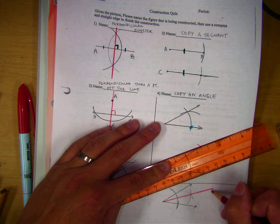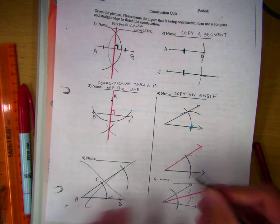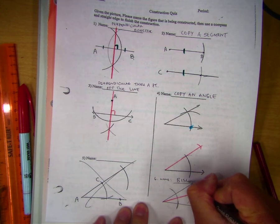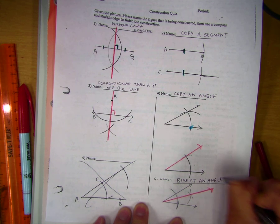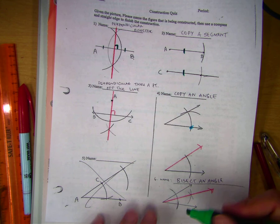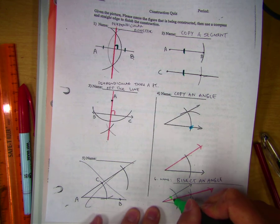Class, what is that one? Bisect an angle. Cut an angle in half. And those symbols, now we have congruent angles.